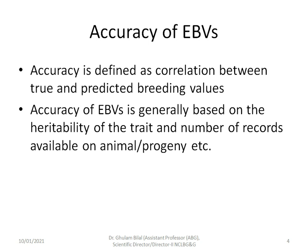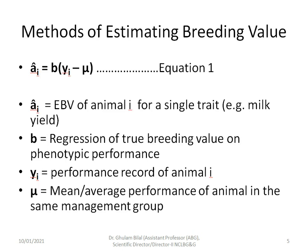Some words on accuracy of EBV: accuracy is defined as the correlation between true and predicted breeding values. Accuracy of EBVs is generally based on the heritability of the trait and the number of records available on the animal.